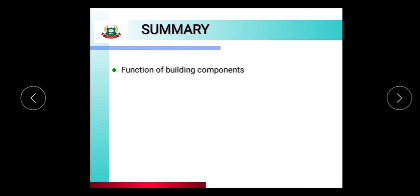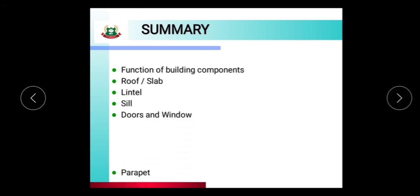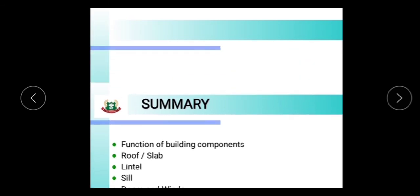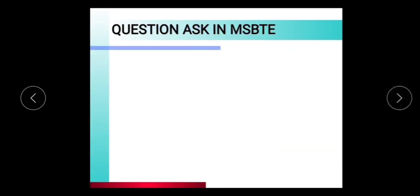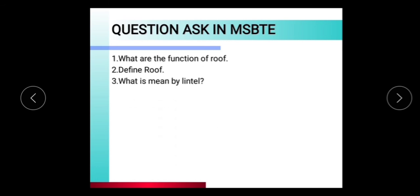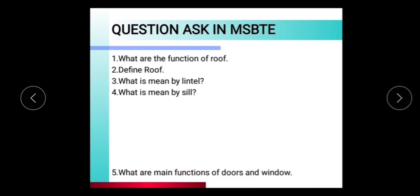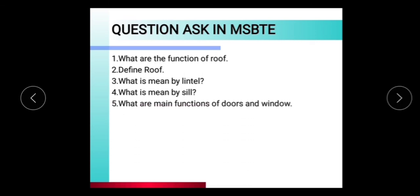Summary of this session: function of building components, including roof and slab, lintel, sill, doors and windows, parapet, and staircase. Important questions for the MSBT examination: What are the functions of roof? Define roof. What is meant by lintel? What is meant by sill? What are the main functions of doors and windows? State the purpose of staircase.